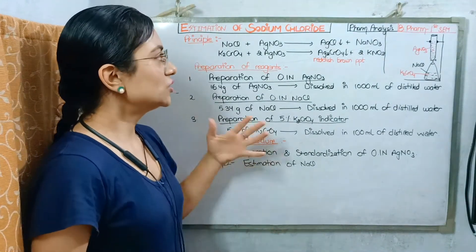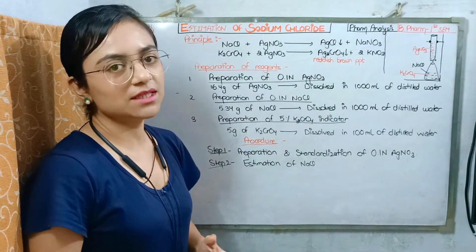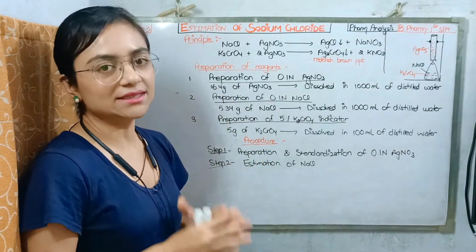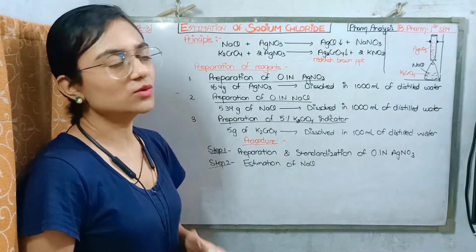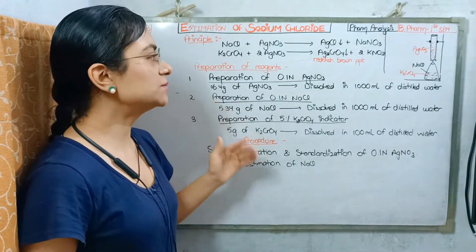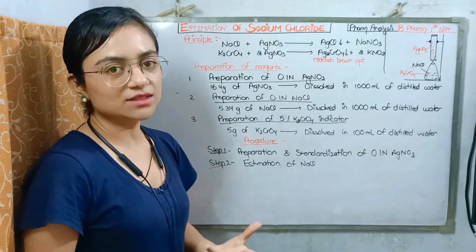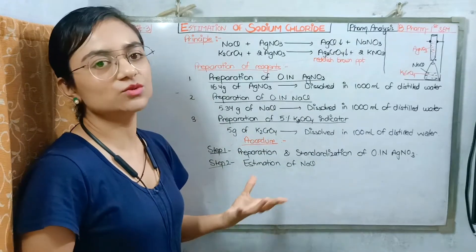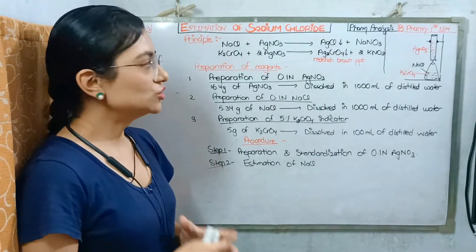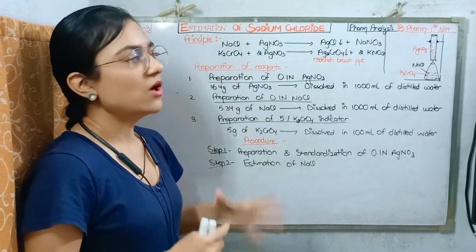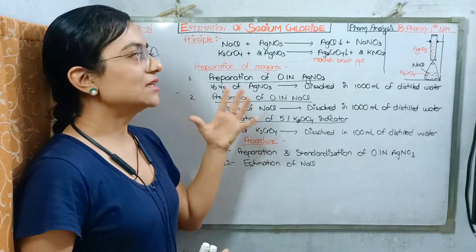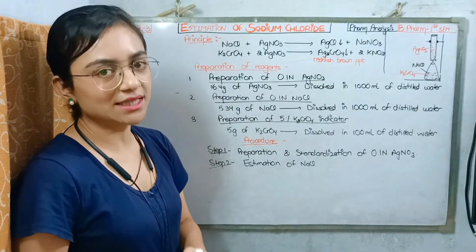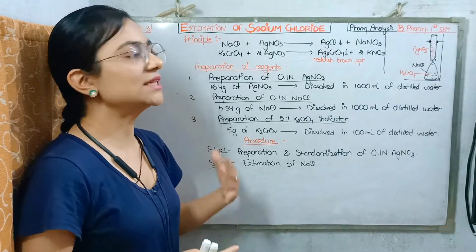If we talk about the principle, for the estimation of sodium chloride, we take a conical flask. In this, we will use an indicator which is potassium chromate. We will add silver nitrate (AgNO3), which is a precipitating agent.